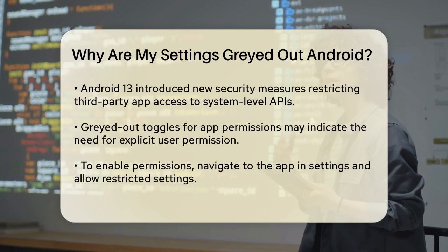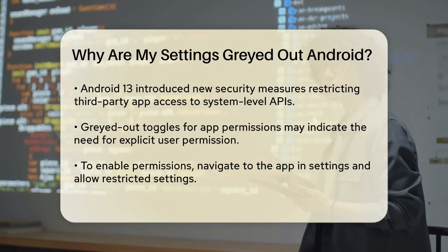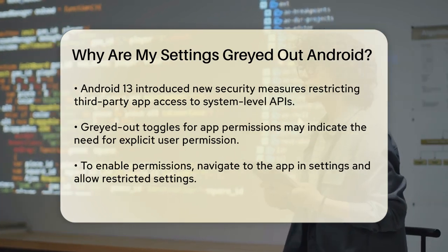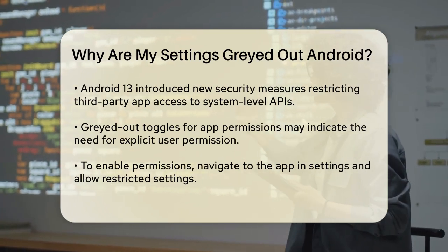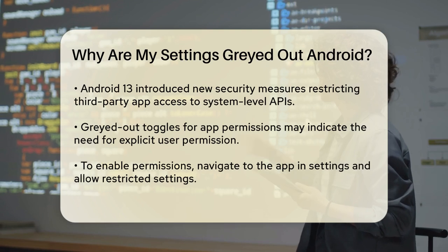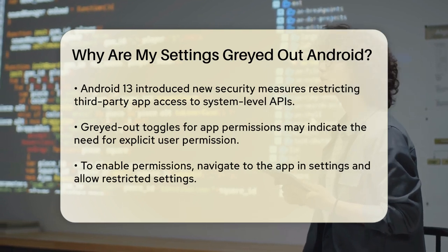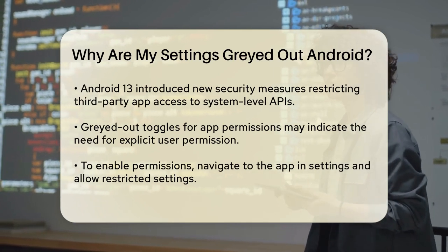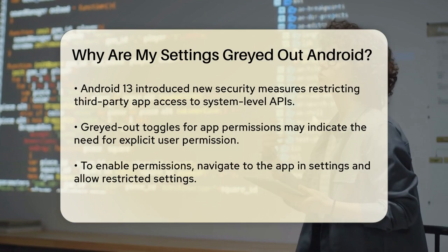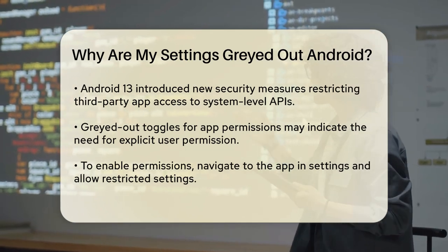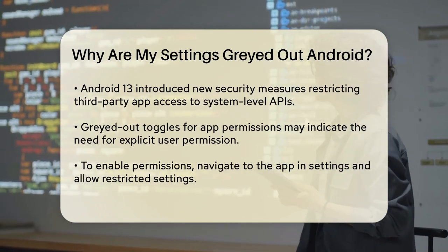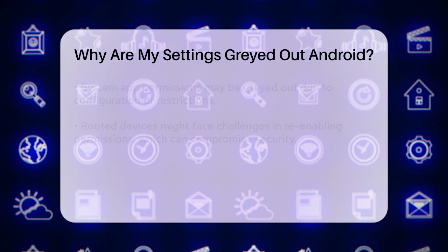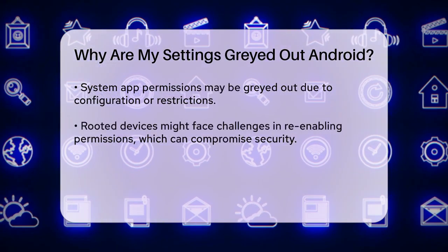Another reason settings might be grayed out is related to app permissions. In Android 13, Google introduced new security measures that restrict third-party apps from accessing system-level APIs without your explicit permission. This means that if an app needs notification access or other sensitive permissions, the toggle to enable these permissions might be grayed out. To overcome this, you need to allow restricted settings for the app. Go to your settings, find the app in question, and look for the restricted settings prompt. Following the prompts will allow the app to access the necessary APIs.